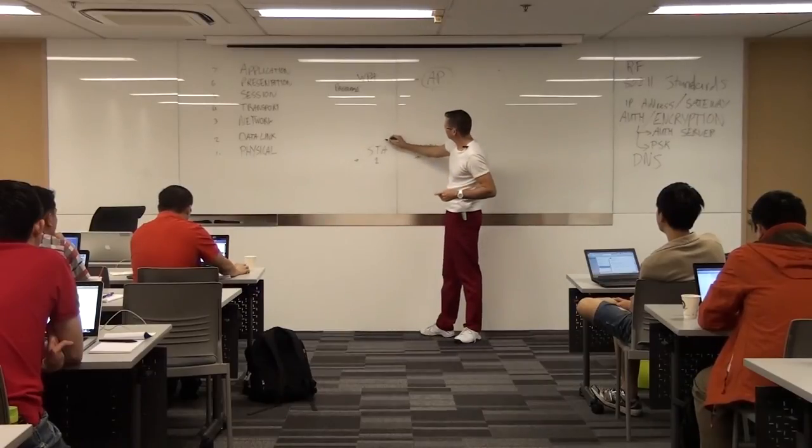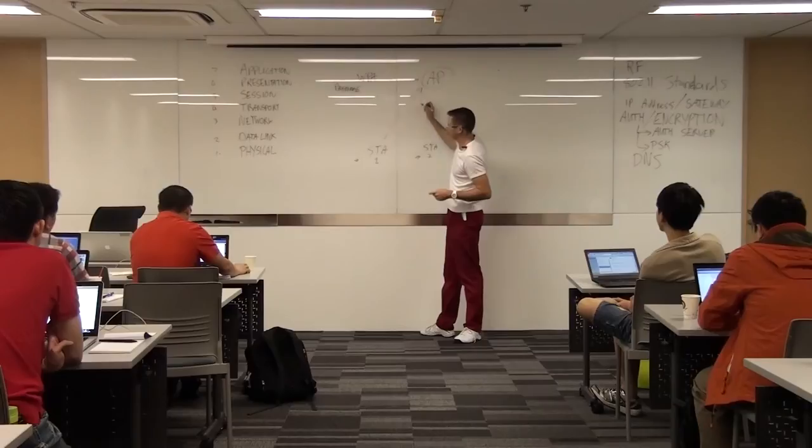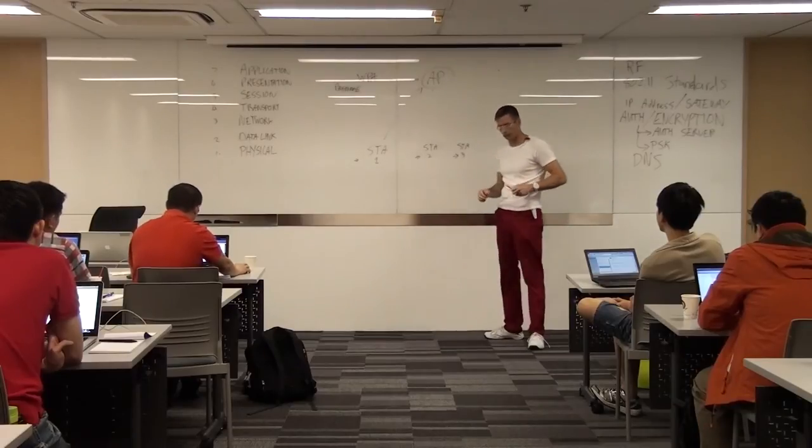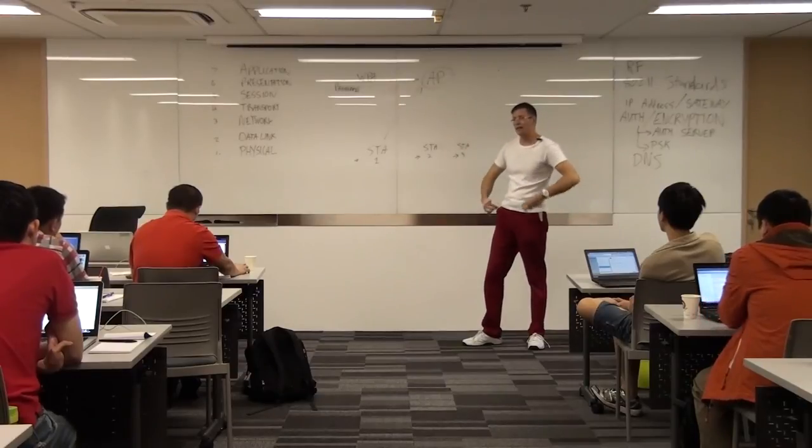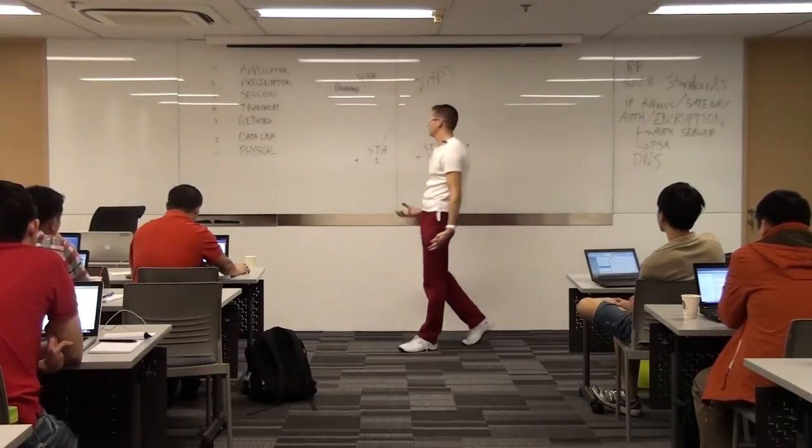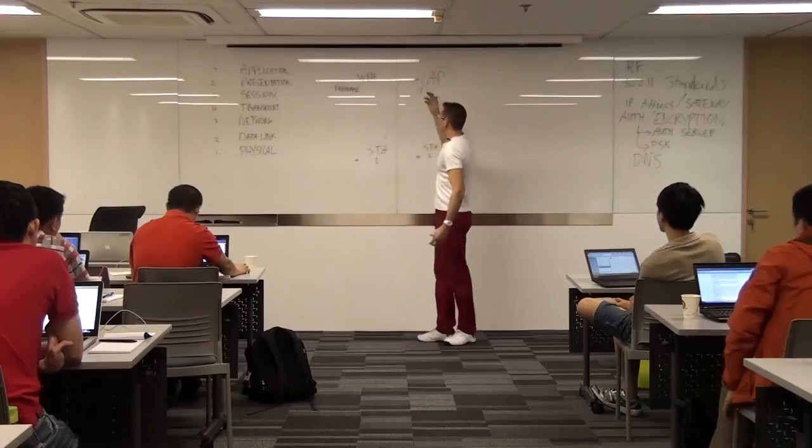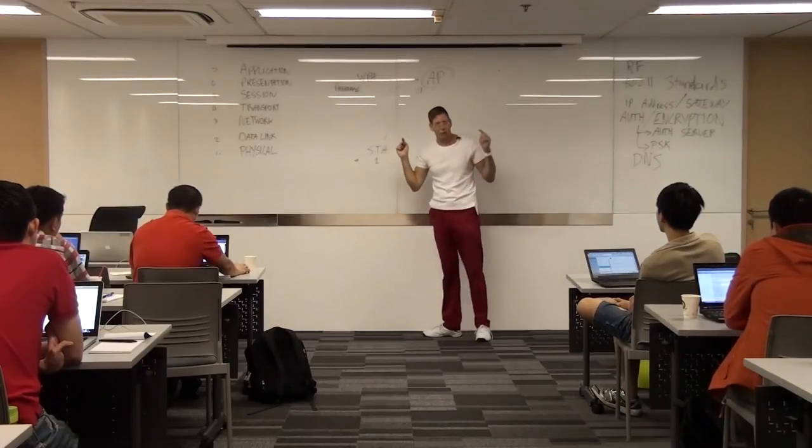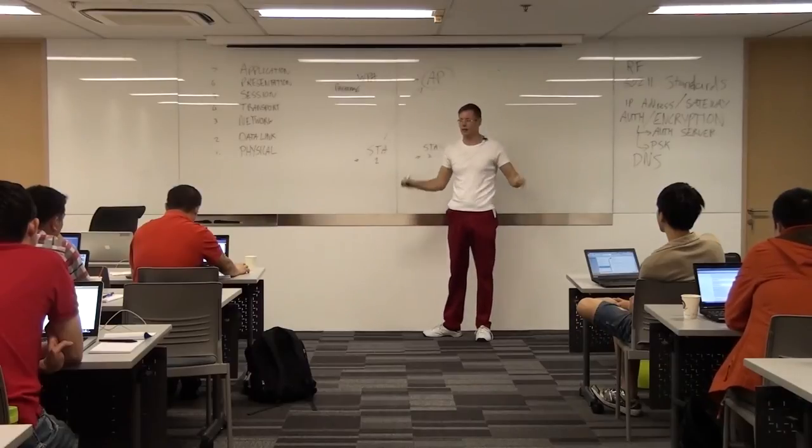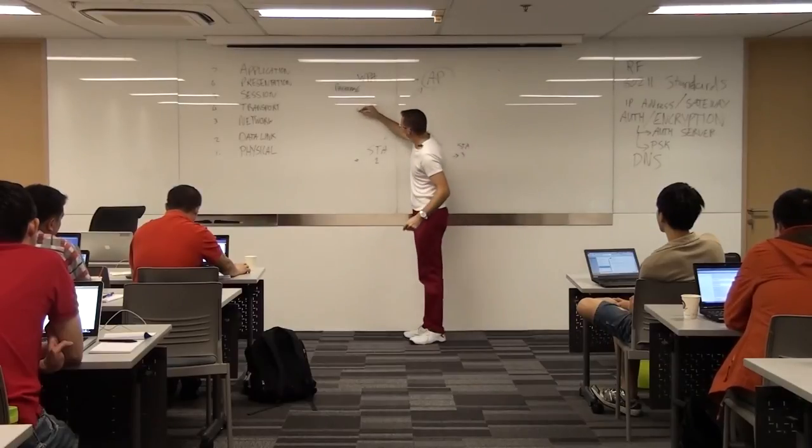We get that key when the station associates to an AP. So we've done our authentication, we know the protocols are good, we associate to it, now we get to the encryption part. What we actually do between the station and that AP is make our traffic encryption key then.